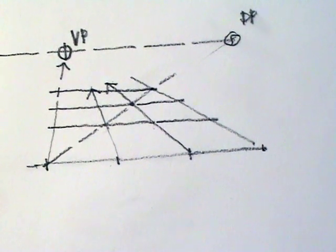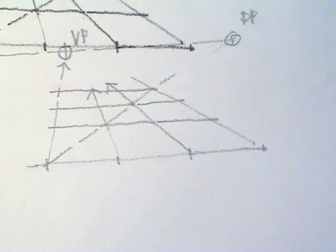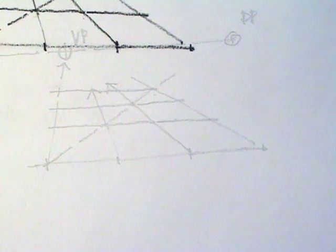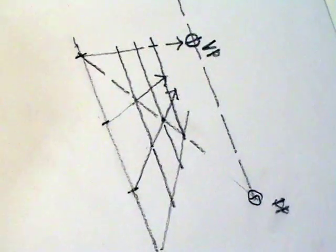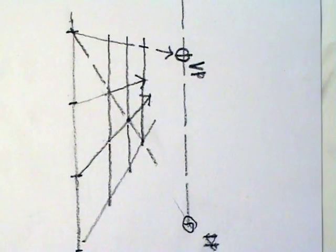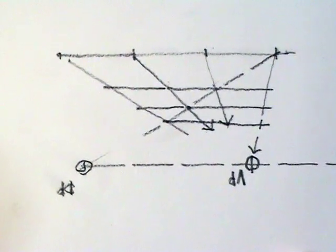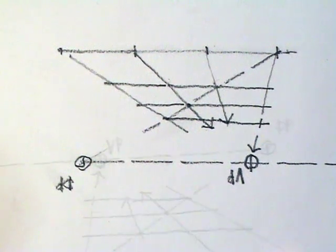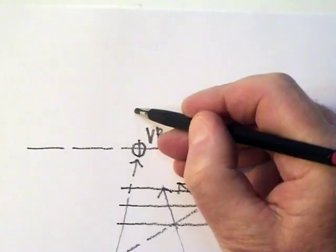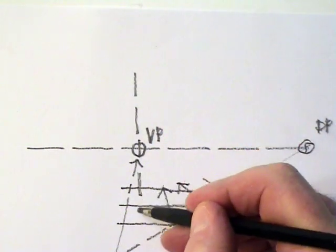And that is in one-point perspective. Now remember this is a grid. It can be imaginary, it's a measuring tool, it can be horizontal, can be vertical either side, or it could be a ceiling plan or an overhead grid. This vanishing point is also my center of vision. That's where I'm looking.